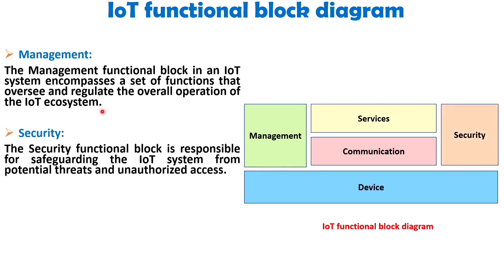Next is security. The security functional block is responsible for safeguarding the IoT system from potential threats and unauthorized access. It achieves this by implementing various security measures such as authentication to verify the identity of users and devices, authorization to control access rights, ensuring message and content integrity to prevent data tampering, and data security measures to protect sensitive information from being compromised.